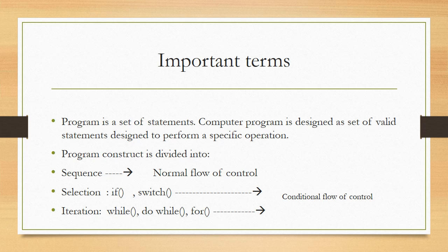What is a program? A program is a set of statements — a computer program is designed as a set of valid statements to perform a specific operation. A program construct is divided into three parts: number one, sequence; number two, selection; number three, iteration. In sequence, the program executes from top to bottom. In selection, the part that satisfies the condition is executed. Iteration consists of loops: while, do-while, and for loop.